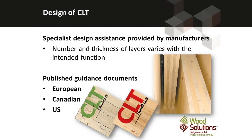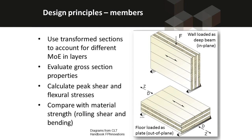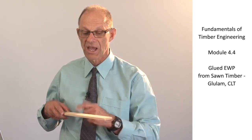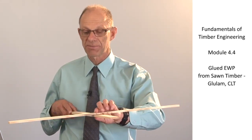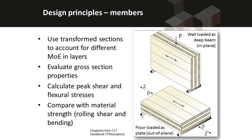The design of cross laminated timber is facilitated by a number of guidebooks — European, Canadian and US guidebooks — any of which can be and have been used in Australia. Essentially they use transformed sections, applying the full properties of all laminates where the grain is parallel to the load direction, and reduced properties for laminates where the grain is perpendicular to the load direction. It uses classic strength of materials transformed section theory to determine the performance of the cross laminated timber sections.